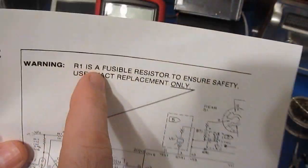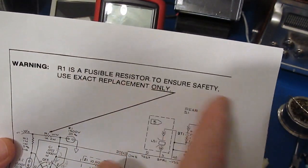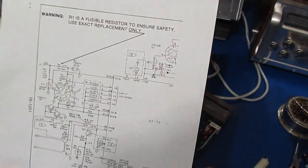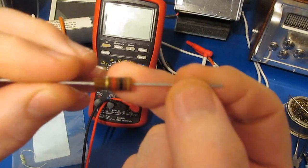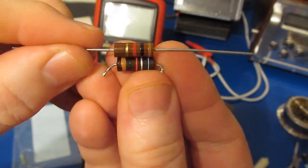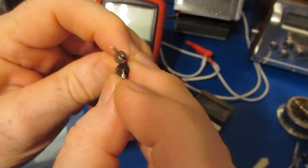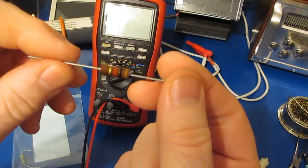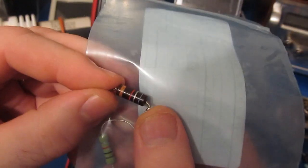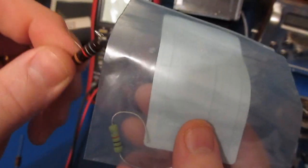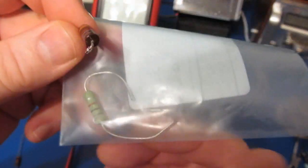It's marked 1k 2 watt wire wound. R1 is a fusible resistor to ensure safety, use the exact replacement only. Again I'm not really too concerned about safety here. I have a standard 2 watt resistor I could easily put this resistor in place of this one. You can see physically they're same size, of course this is not a fusible safety resistor.